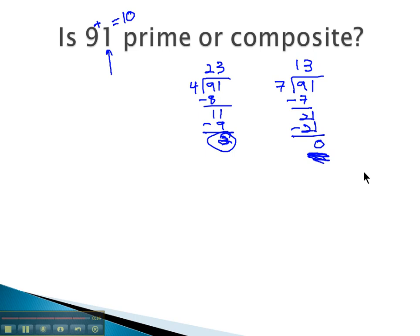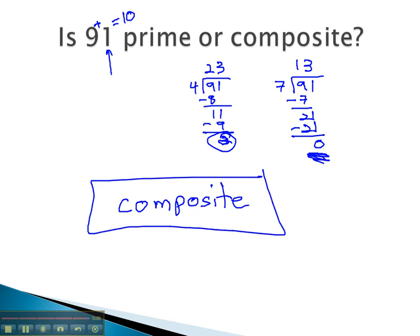Because 7 divided into 91 evenly, we would say this is a composite number. It's divisible by more than just 1 and itself.